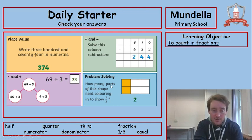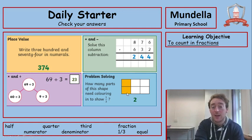And then it says problem solving. How many parts of this shape need colouring in to show 1 third? And we've got them coloured in there. The answer was 2. Brilliant.